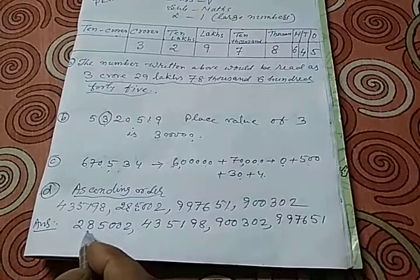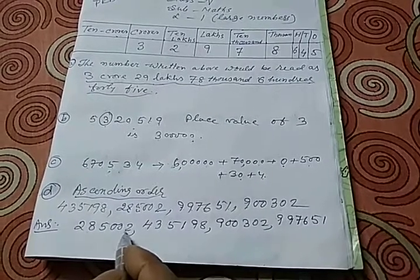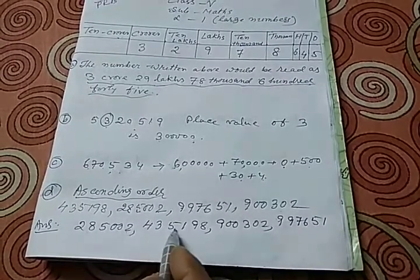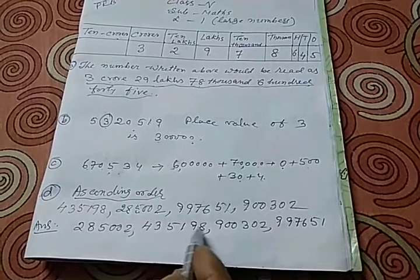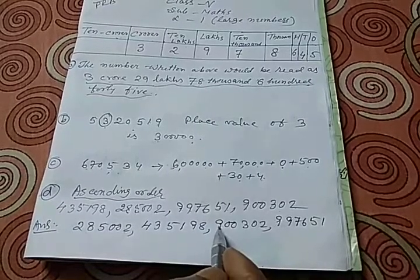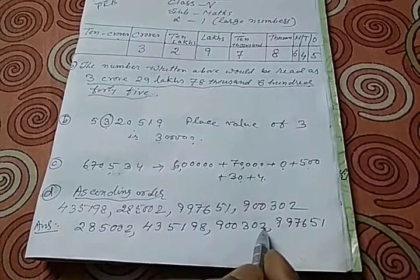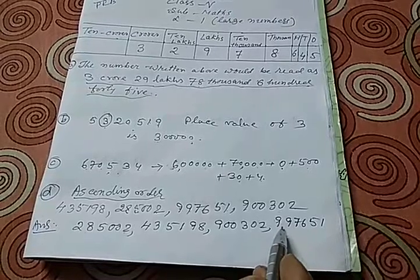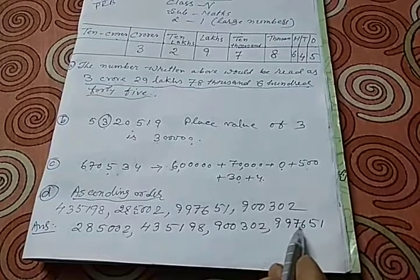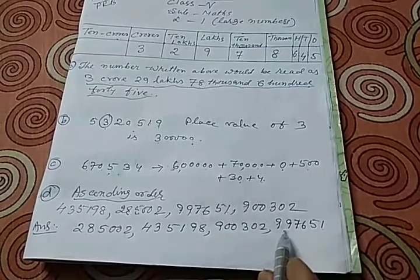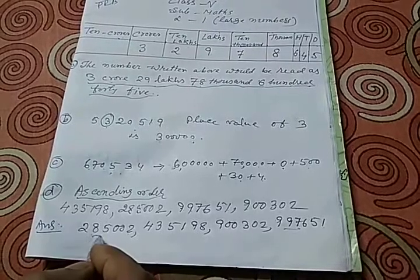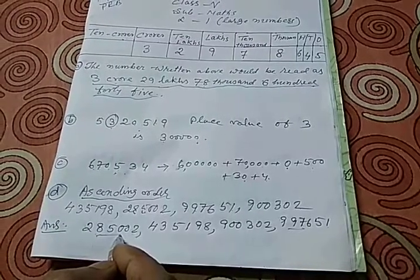It is to be written first, then the next number is 435198, and the third number is 900302, and the last number is obviously 997651. This is the greatest number and this is the smallest number in this series.